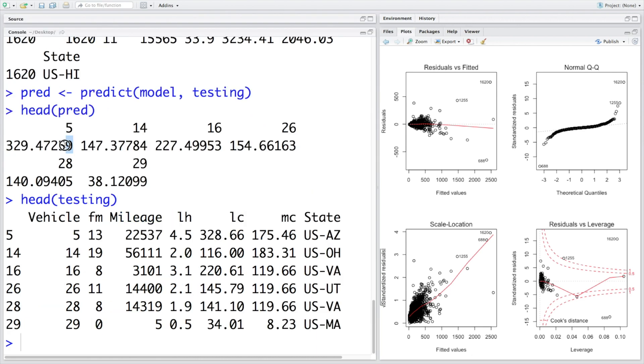We can compare this with the values in the testing data set. If you look at the first prediction, labor cost is estimated to be $329.47. If you look at the actual labor cost, it is about $328.66. This is quite close to the predicted value, difference is about one dollar. So not that bad. Second prediction is $147.37 compared to actual value of $116, so slightly off. Then we have $227, $220, about seven dollar difference. There are occasions when the predictions are pretty close, and there are some occasions where the differences are more.